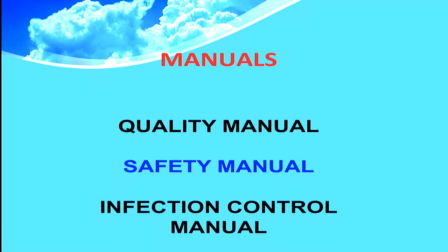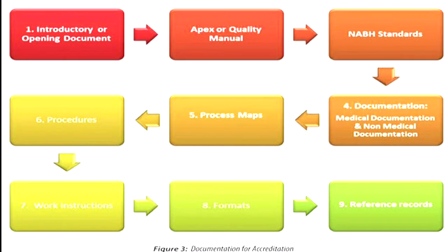There are three main manuals which all hospitals have to have — you can have more, but at minimum: the quality manual, safety manual, and infection control manual. Every manual has to have an introduction or opening document. The Apex quality manual is mandated in all hospitals catering to NABH standards. Documentation will be both medical and non-medical. You must have a simple process map with the procedures and work instructions, all in a similar standard format. Using an EMR really helps achieve standardization.